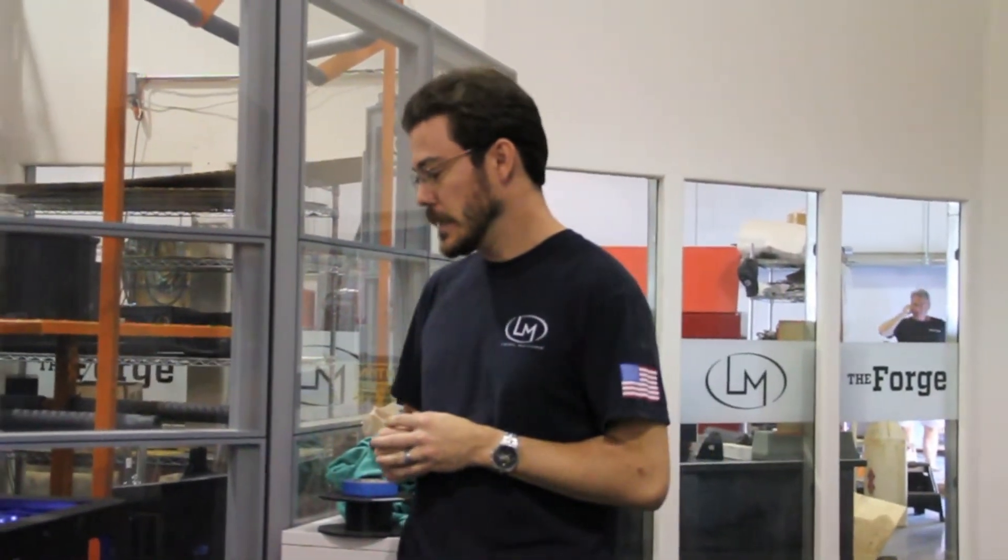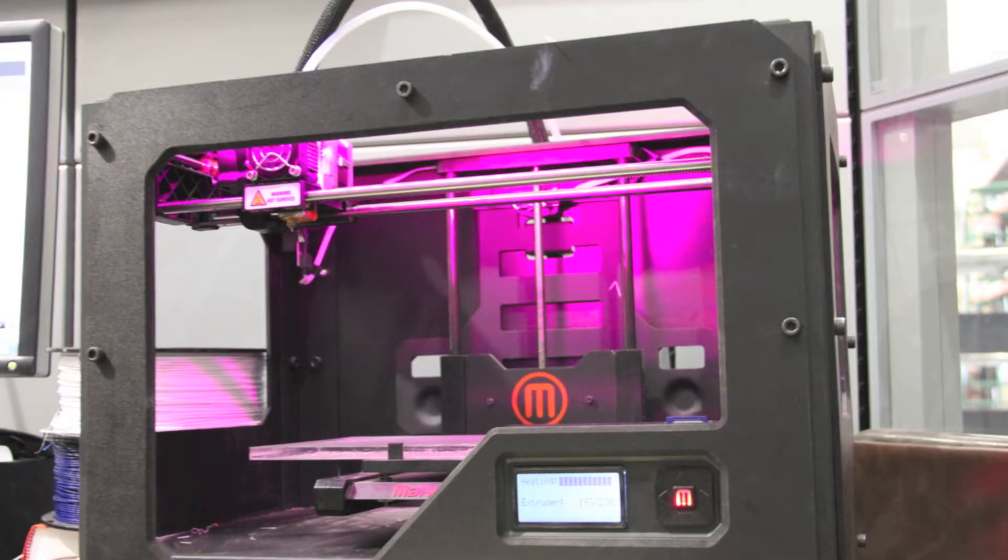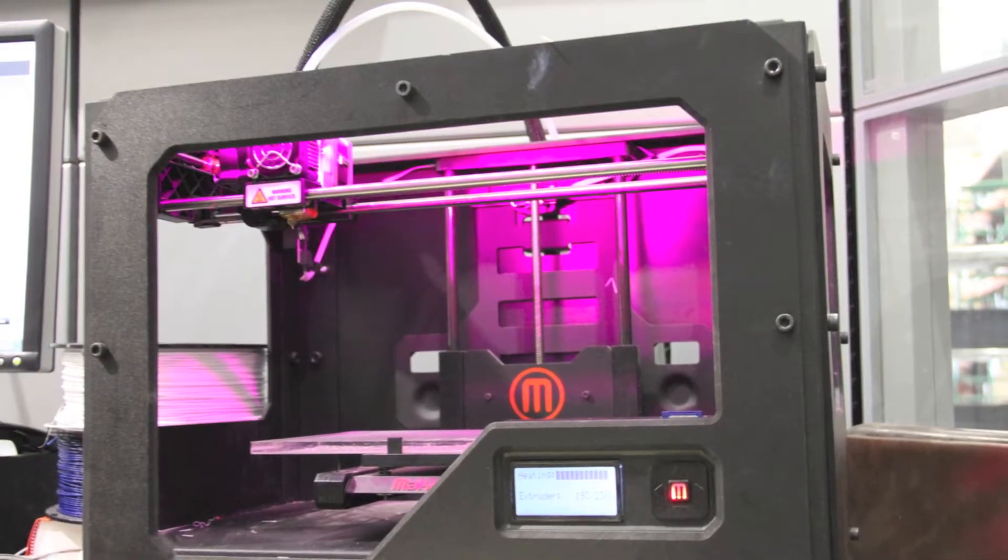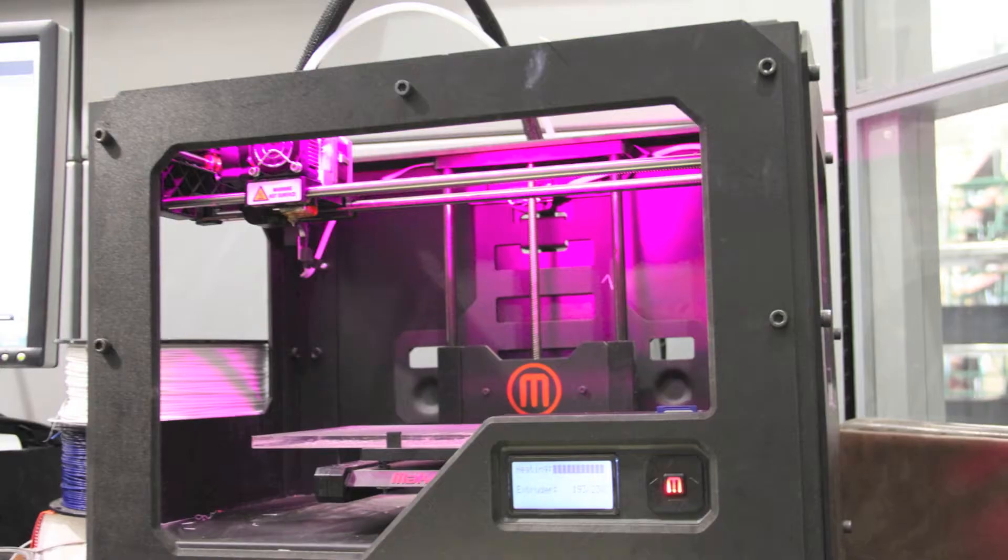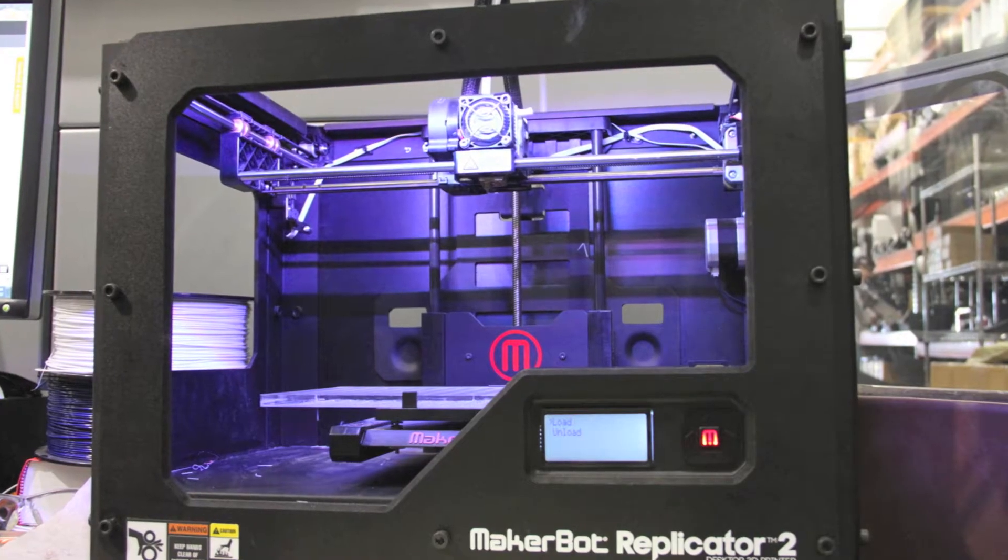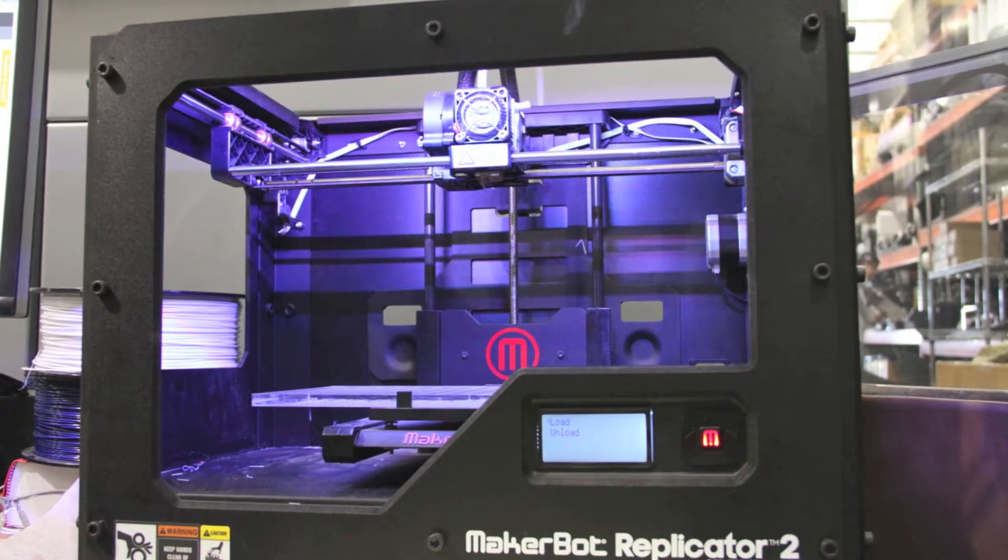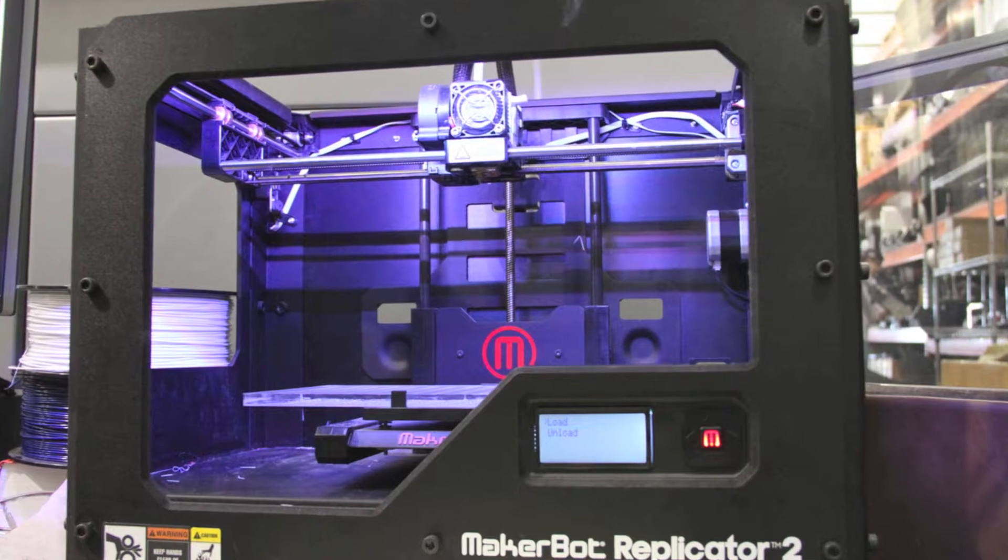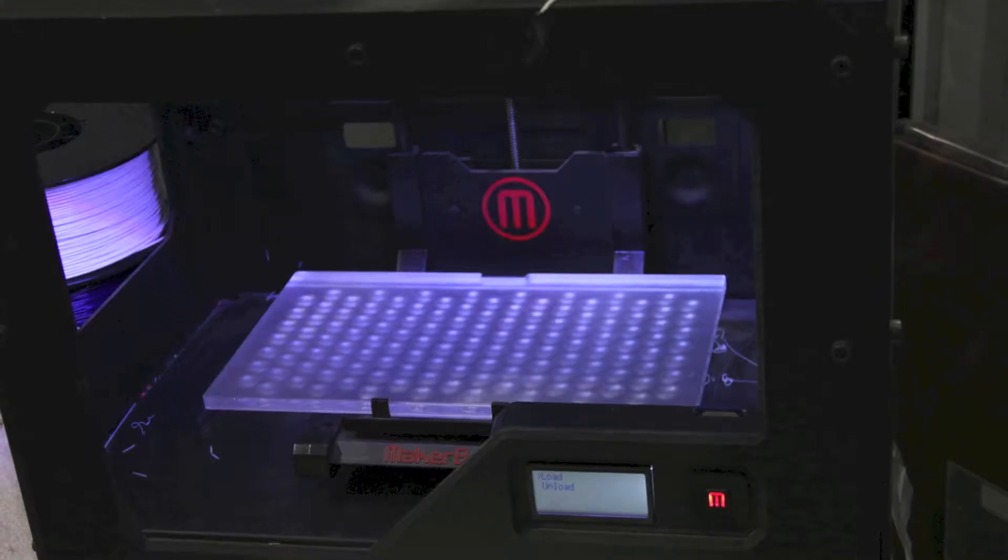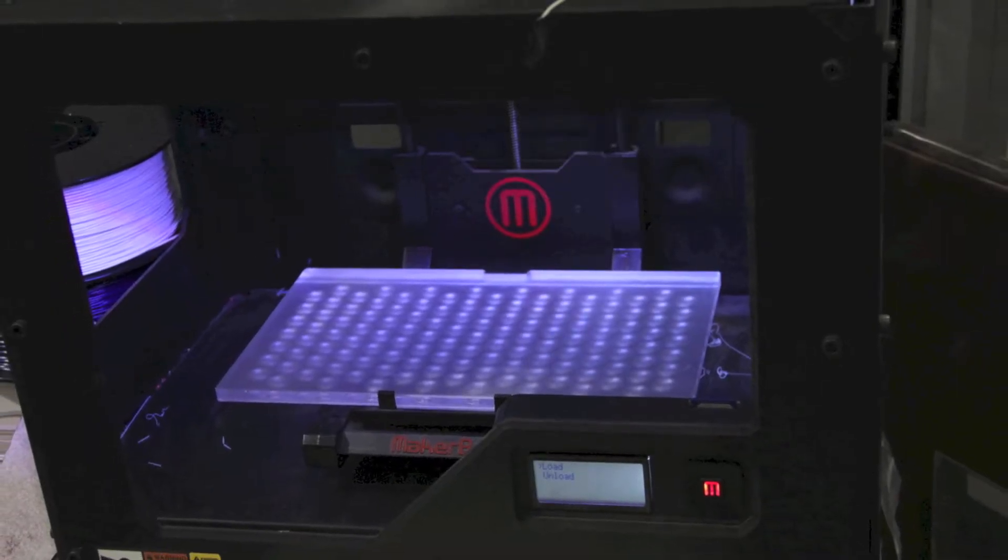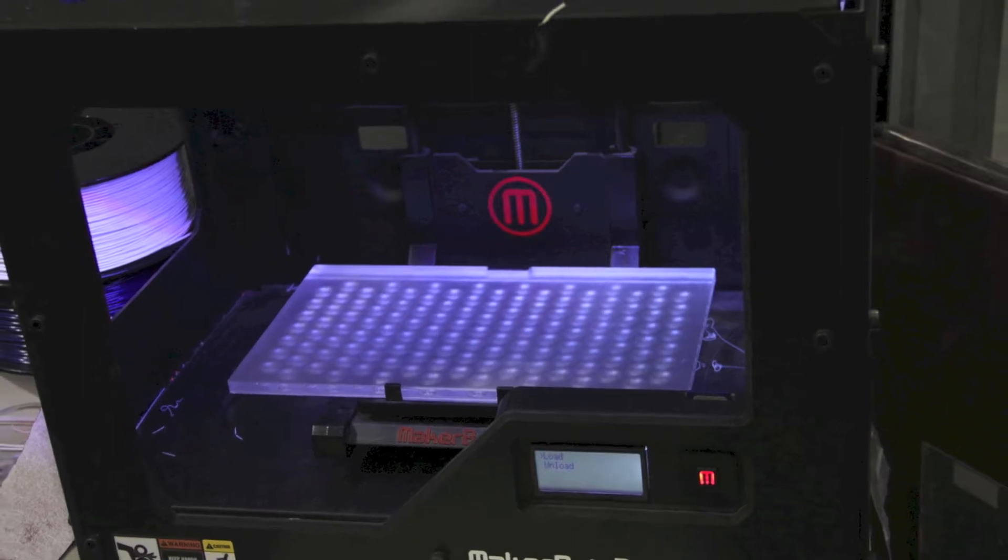So we really love our Replicator 2 from MakerBot. This little baby's been doing us proud, but over the last couple of weeks we've been having some issues with the extruder. A lot of people in the MakerBot community have been having the same issues with this particular extruder model and that's kind of tough for us right now because we've started using the MakerBot for actual production parts, some cosmetic parts on the Rally Fighter. So it's pretty crucial that we keep this thing running.